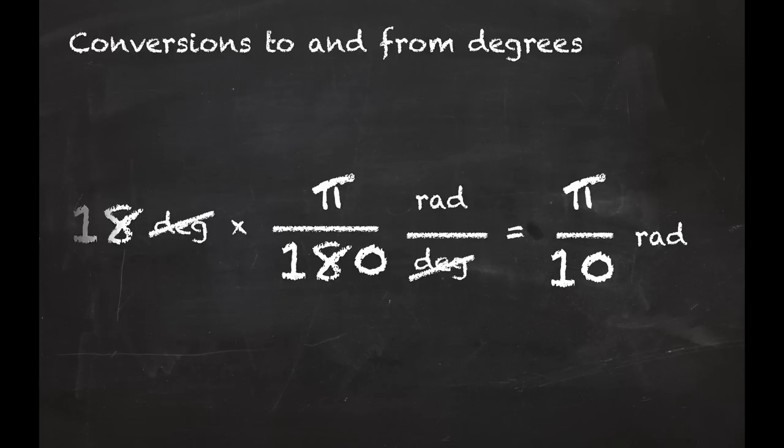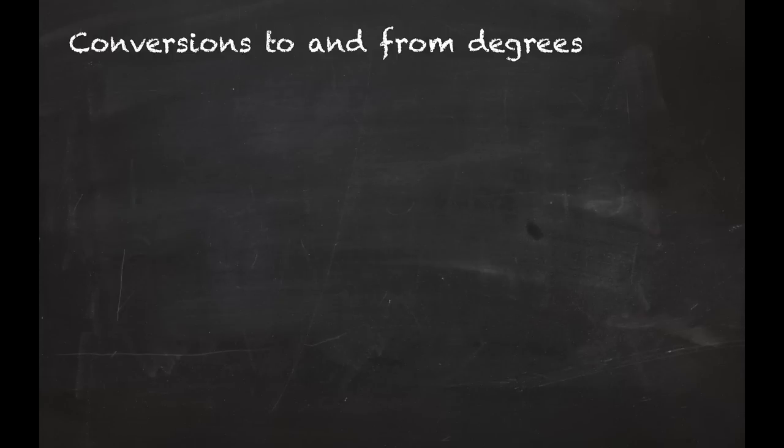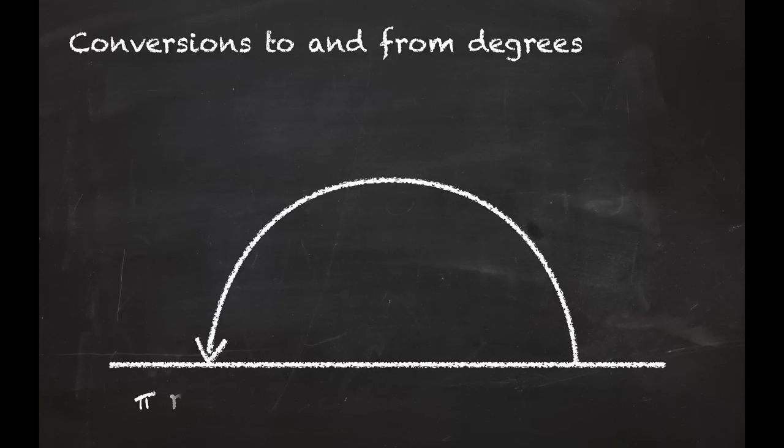But in fact, what you really want to do instead of converting all the time is start speaking radians natively. That is, don't rely on translations back and forth from degrees. There are π radians in a half circle.